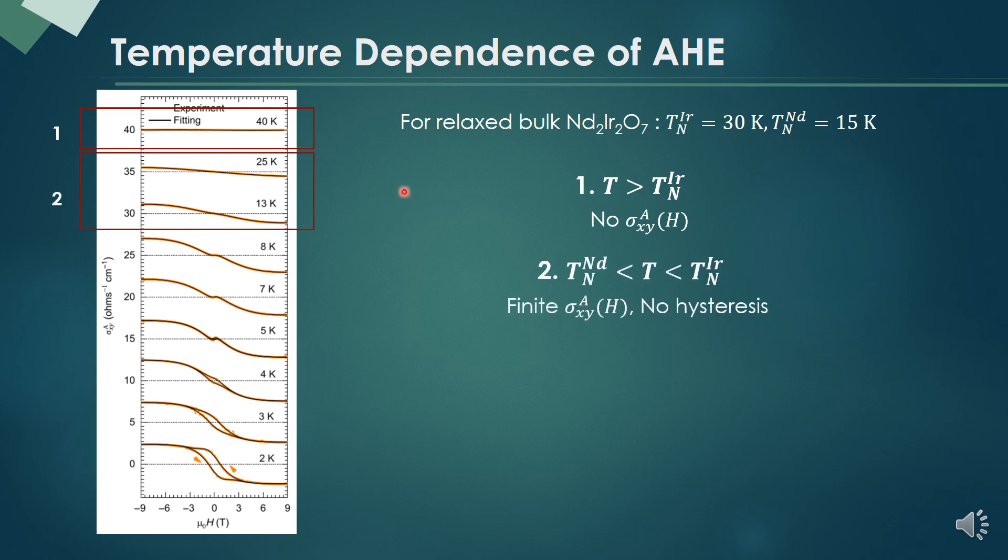In the second region, between 30 Kelvin and 15 Kelvin, there is finite anomalous Hall conductivity, but there is no hysteresis or spontaneous Hall conductivity at all.